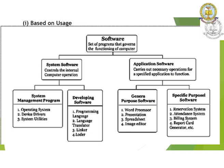In the developing software, we have programming languages, language translators, linker and loader. Whereas application software carries out the necessary operations for a specified application. It is further classified into general purpose software and specific purpose software. In general purpose software, we have word processor, presentations, spreadsheets, and image editors. In specific purpose software, we have reservation systems, report card generation, alternative systems, etc.